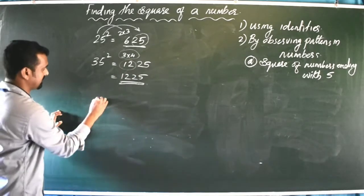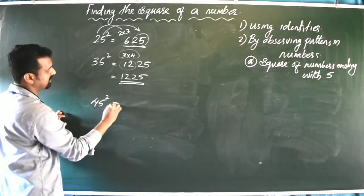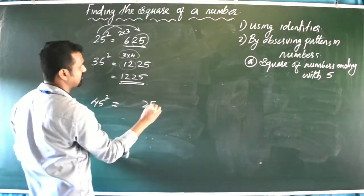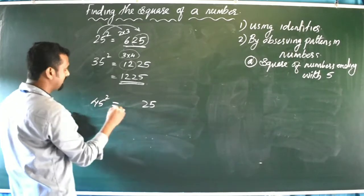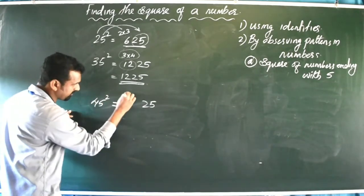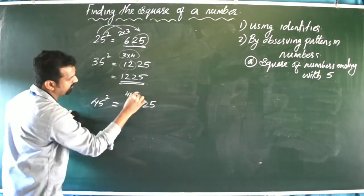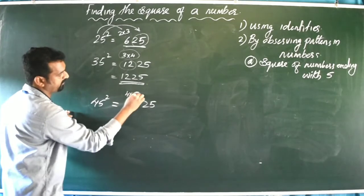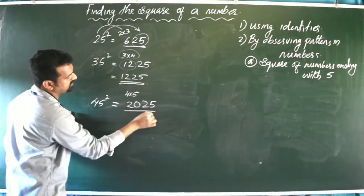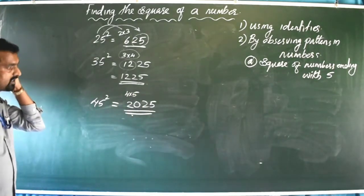For 45²: we write 25 at the end, and the first digit is 4. We multiply 4 by the next number: 4 × 5 = 20. So 45² = 2025.